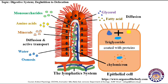Triglycerides get coated with proteins to form smaller droplets called chylomicrons. Chylomicrons from the epithelial cells enter the lacteals, which are the central lymph vessels. From there, chylomicrons move into the lymphatic system and eventually join the bloodstream for transport throughout the body. Thus, monosaccharides, amino acids and minerals are carried by the blood, while glycerol and fatty acids form triglycerides, which are carried as chylomicrons by the lymphatic system.